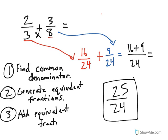That is the three-step process to adding two fractions when you have unlike denominators.